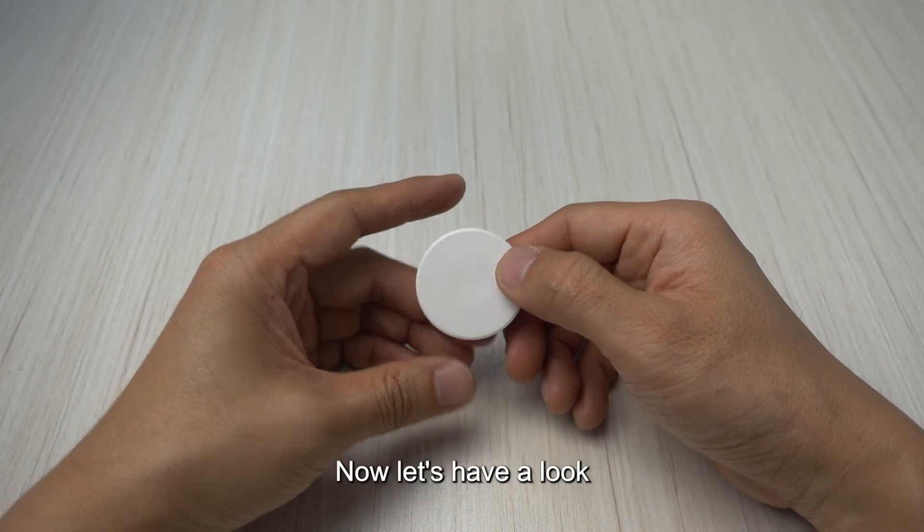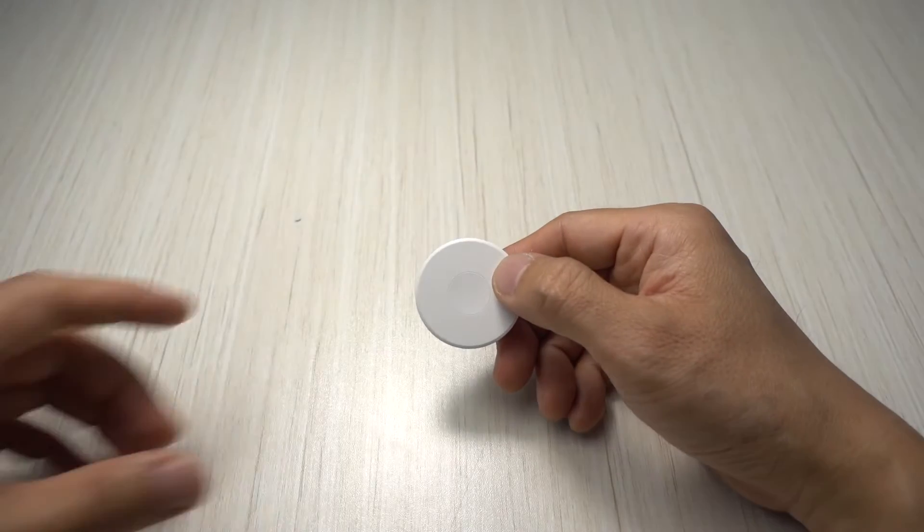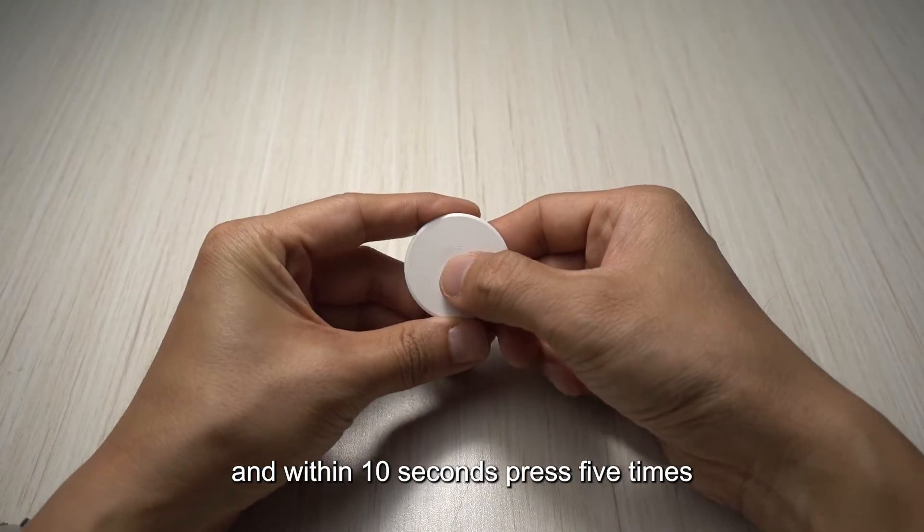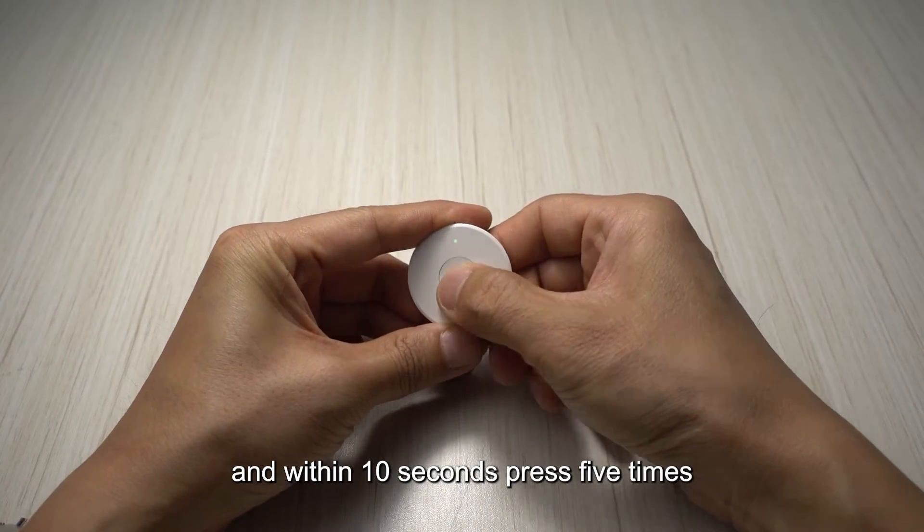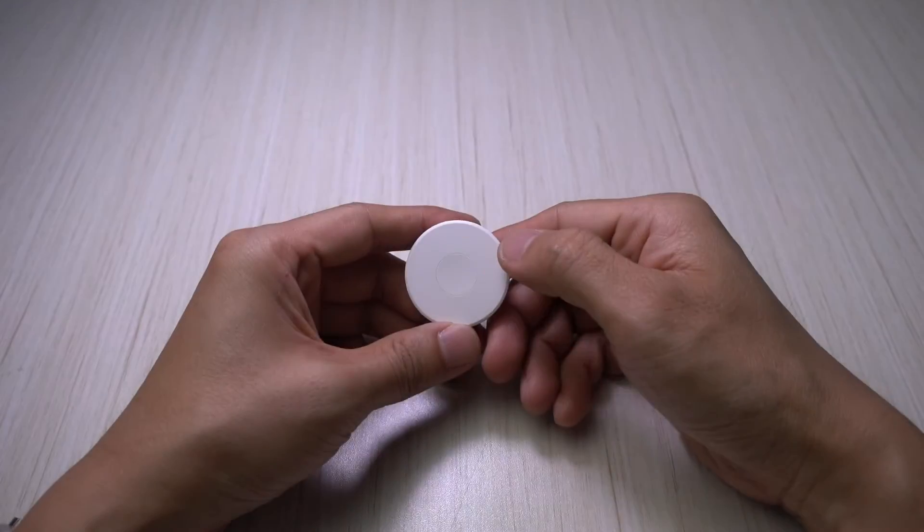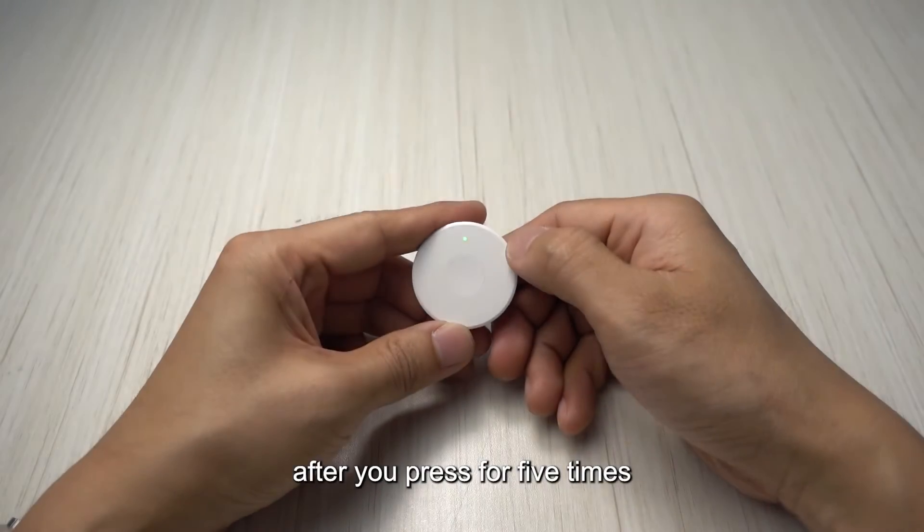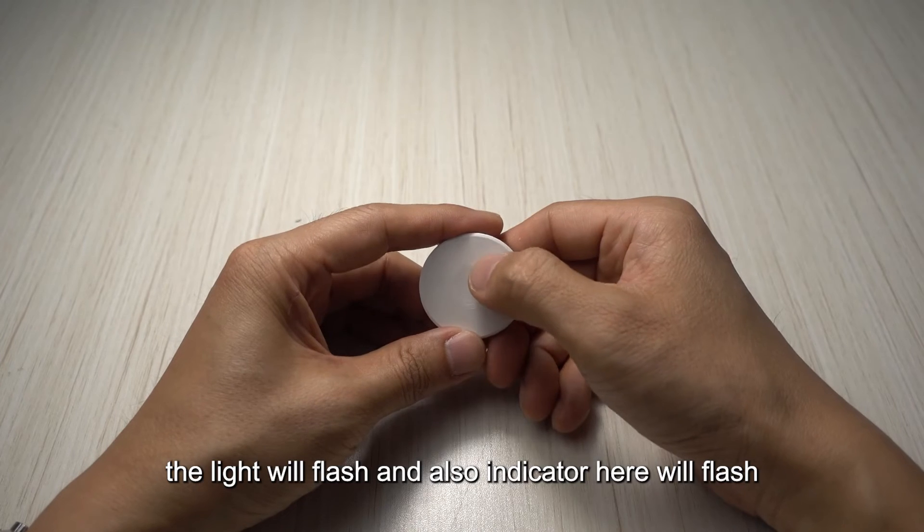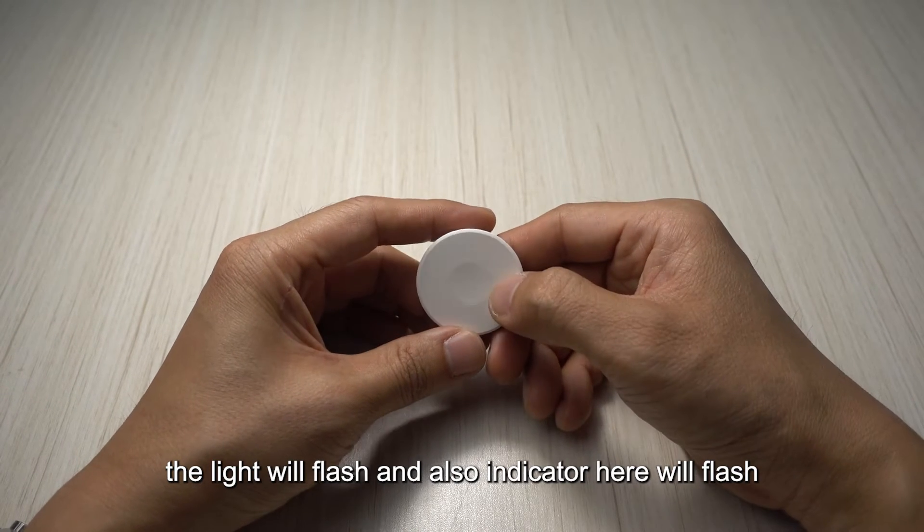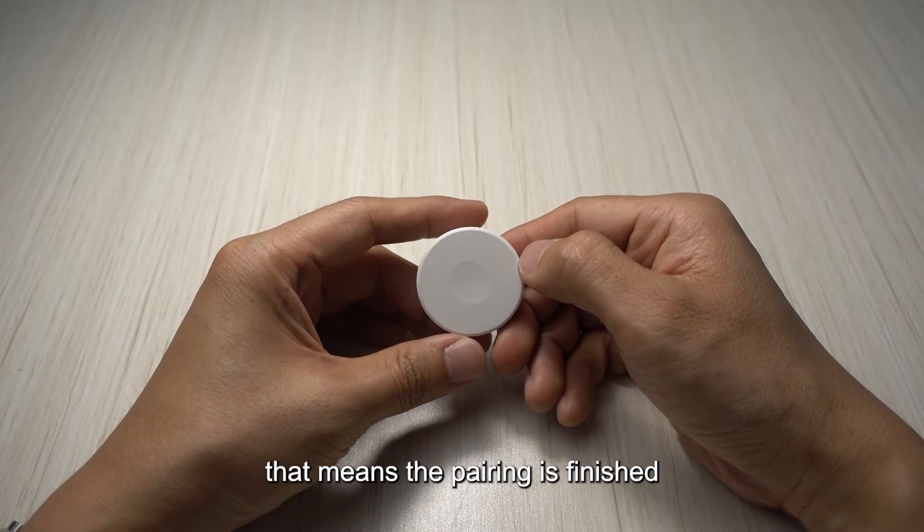Now let's have a look. I will turn on the light and within 10 seconds press five times: one, two, three, four, five. So after you press for five times the light will flash and also the indicator here will flash and that means the pairing is finished.